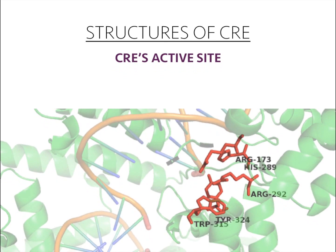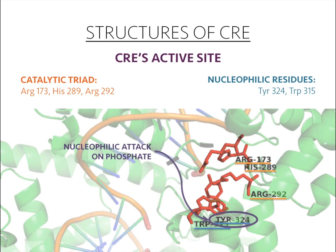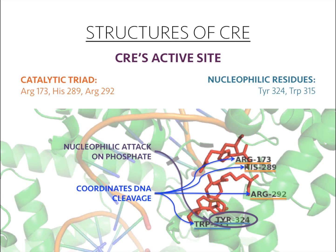Cre has an active site on each monomer, giving it four active sites total. Unlike many other recombinases such as FLP recombinase, the active site is not shared between different subunits in Cre. The active site contains a catalytic triad of two arginines and a histidine, along with important nucleophilic residues: a tyrosine and a tryptophan. The tyrosine is particularly important because it performs a nucleophilic attack on a phosphate in the DNA strand, and the other amino acids coordinate the cleavage of the DNA strand.